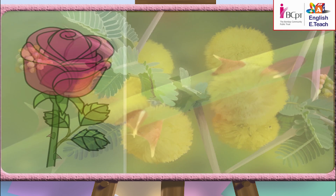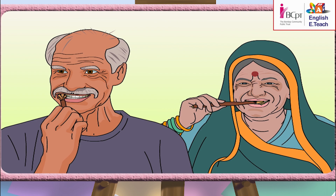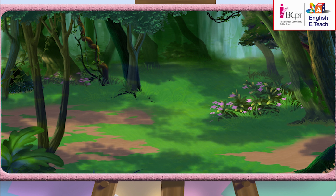You are right, Rhea. Teacher, it has small yellow flowers. That is right, Samir. Teacher, in my village, my grandparents brush their teeth with small Babul twigs. Great, children — you know a lot about the Babul tree! In the next class, we will read about a Babul tree that did not like its leaves or its thorns. But before that, let's learn a few more words.